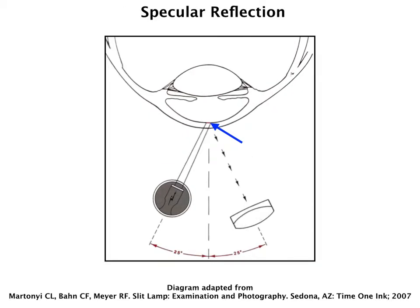A similar technique is specular reflection, and this is very useful in highlighting any endothelial changes in the cornea. The slit beam and the slit lamp are about 50 degrees from each other. You could also use this in highlighting other corneal changes in different layers, but its main usefulness is looking at the endothelial cells.